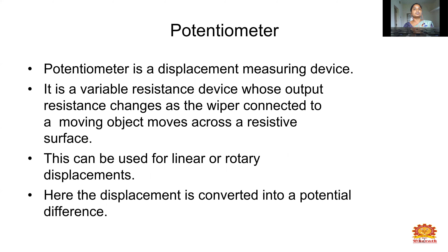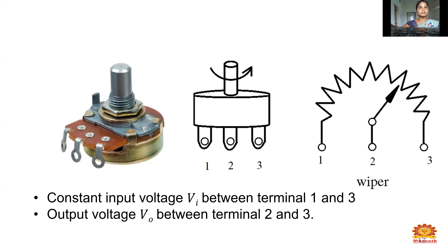Now we discuss the topic of potentiometer. What is meant by potentiometer? It is a displacement measuring device. It is a variable resistance device whose output resistance changes as the wiper, connected to a moving object, moves across a resistive surface. This can be used for linear or rotary displacement. In an electrical machines lab, we use the rheostat, which is also called a potentiometer. Two points are fixed; another one point is moving — the moving point gives linear or rotary displacement. The displacement is converted into a potential difference, that means a voltage value.